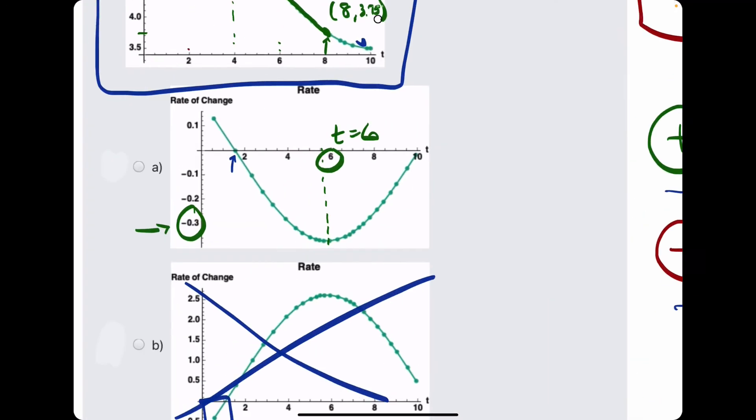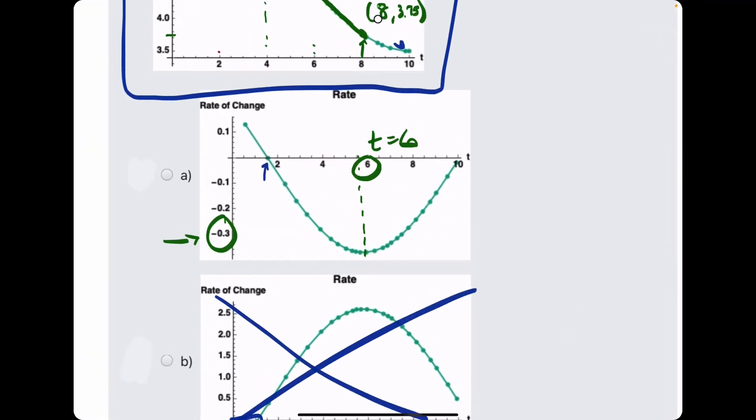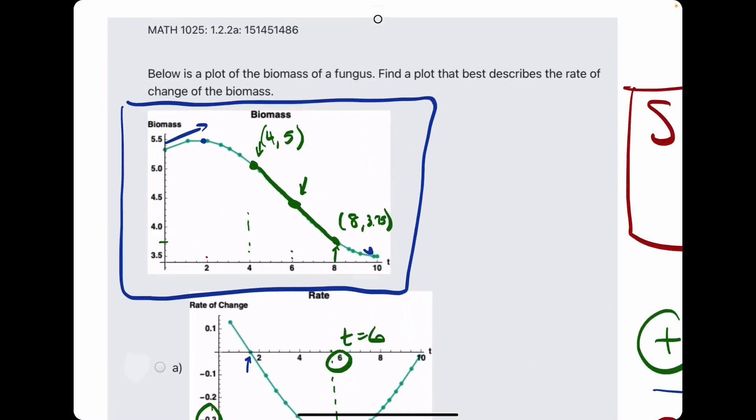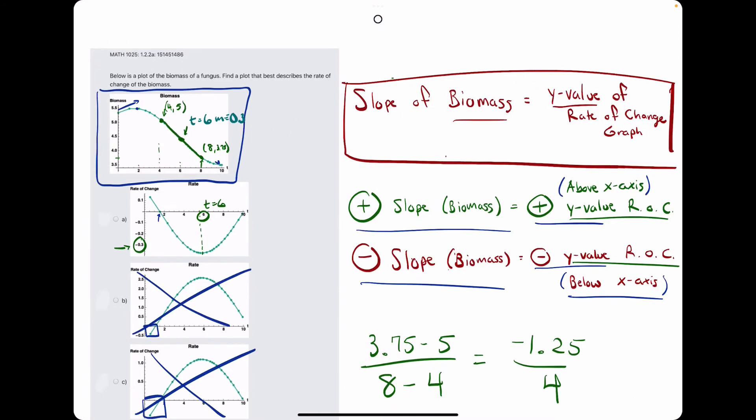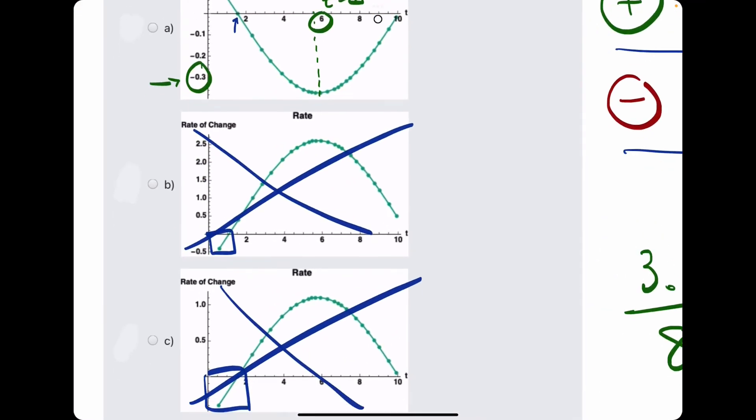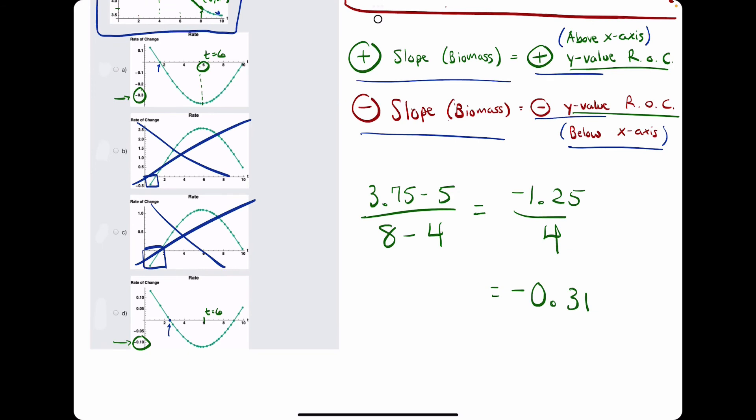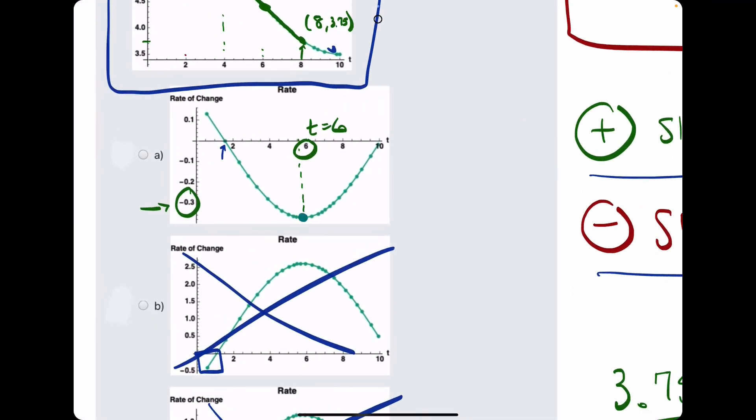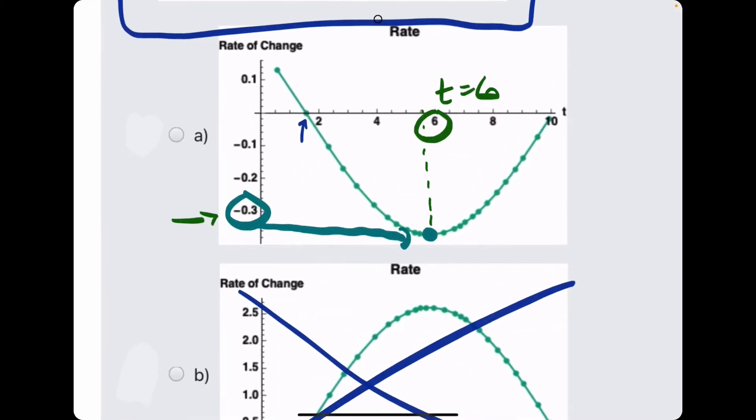And when we look at these options here, it looks like, so because the slope at t equals 6 was about negative 0.3, and the slope of this graph corresponds to the y values on the rate of change graphs, we can claim that right around t equals 6, the y value on this graph is rightly so about negative 0.3,